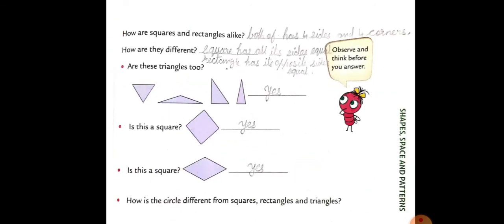Now, how are square and rectangle alike? Because both have four sides and four corners. Kyunki dono ke four corners and four sides hain. How are they different? Because a square has all its sides equal, while a rectangle has only its opposite sides equal.